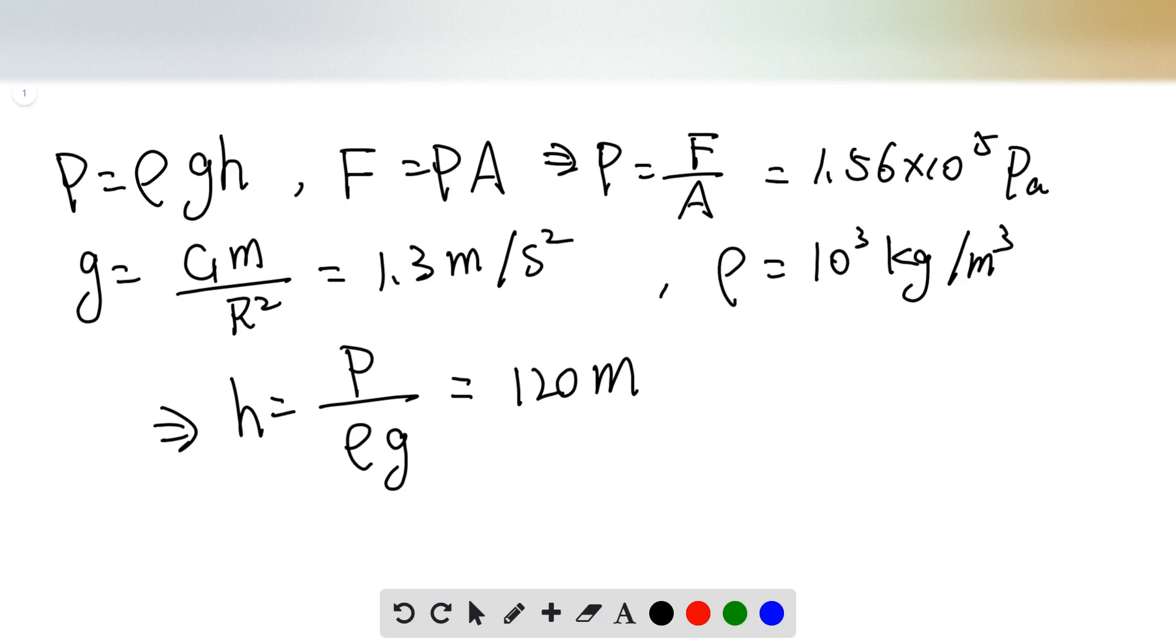And the force, the total force applying on each window, can be the pressure times area. So from this equation, we can know that the pressure is equal to force divided by the area. Plugging in the numbers from the problem, we can get 1.56 times 10 to the fifth Pascals.